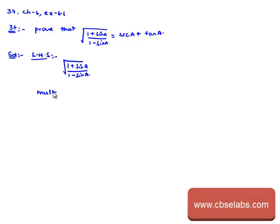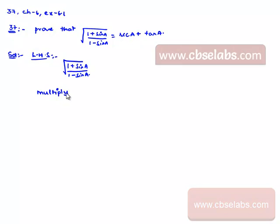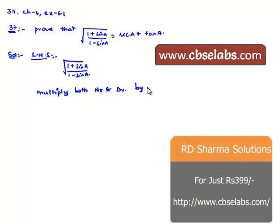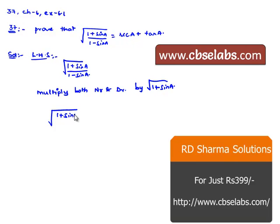Here, multiply both the numerator and denominator by square root of (1 plus sin A). Then we get square root of (1 plus sin A) divided by square root of (1 minus sin A), multiplied by square root of (1 plus sin A) divided by square root of (1 plus sin A).